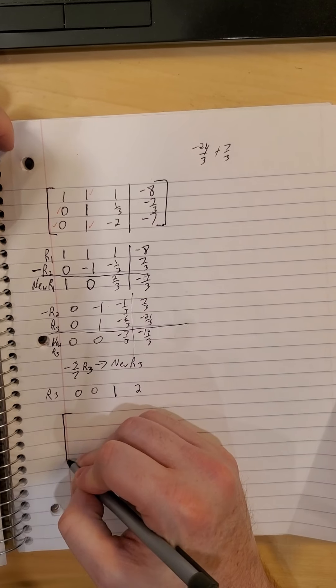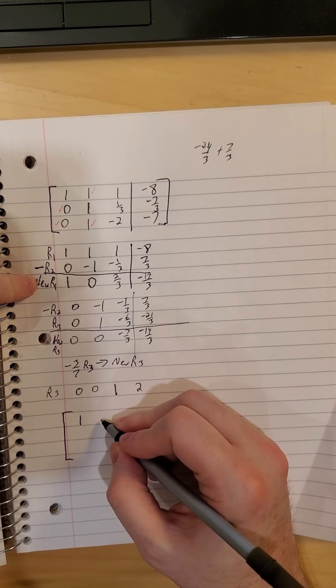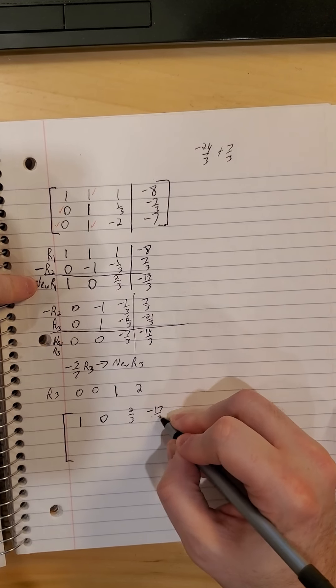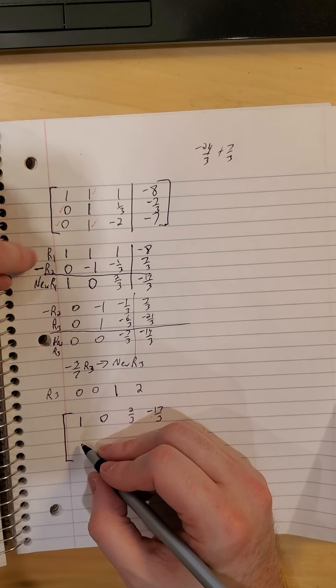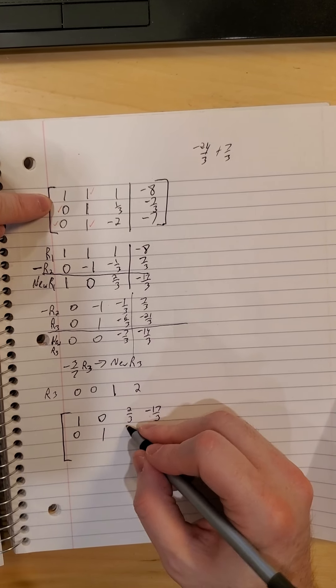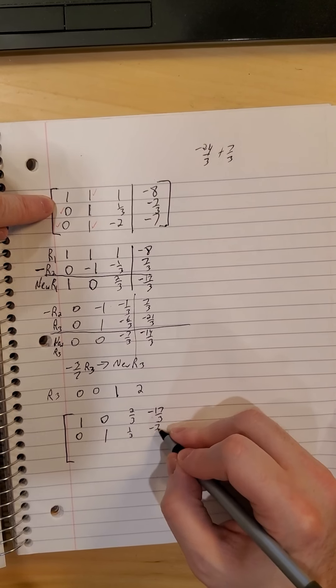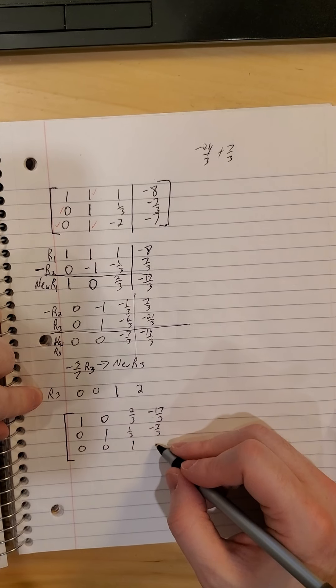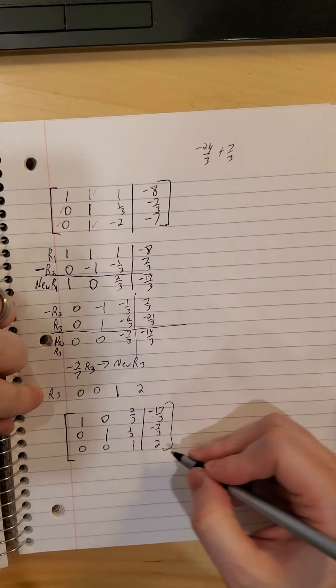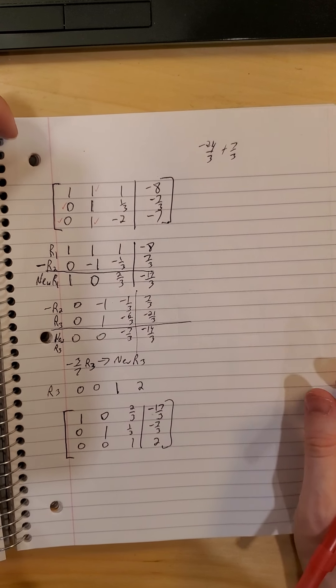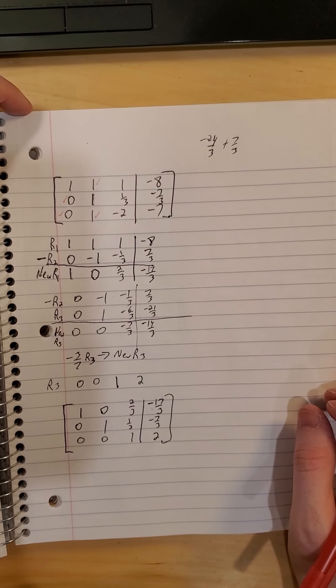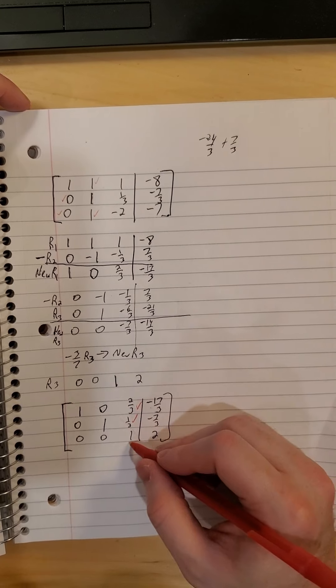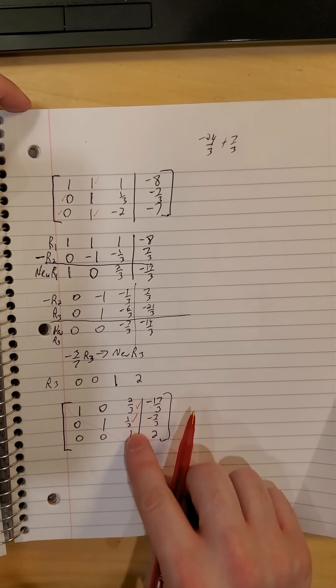So what does our matrix look like now? So our new row 1, we have a 1, a 0, a 2 thirds, and a negative 17 thirds. Row 2 and our new version of row 3. We're very close to where we need to be. So where are the next two zeros that we're after? Here and here. Remember, well, we want to keep ones on the diagonal, zeros everywhere else.